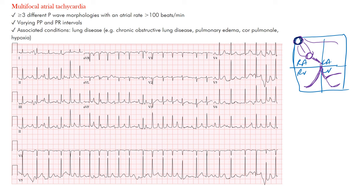What's happening in MAT is that you have multiple foci — different areas within the atria firing fast, as the name implies. You may have an impulse coming from this area, one from here, one from here — but you want at least three different areas within the atria that are firing. Because the impulse is originating from at least three different areas, you're going to have at least three different P-wave morphologies.